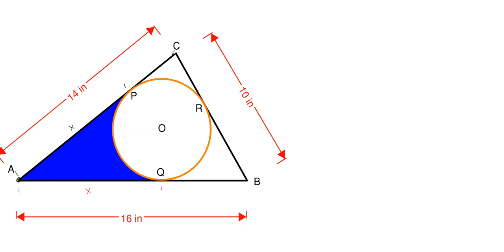Looking at the distance from P to C along the triangle edge, since the total distance from A to C is 14, that means P to C is 14 minus X. And then from Q to B, since the total is 16, this means Q to B is 16 minus X. Since the circle is tangent at a single point, the distance from C to R is also 14 minus X, and R to B is 16 minus X, by the same two-tangent-lines-from-a-single-point reasoning.